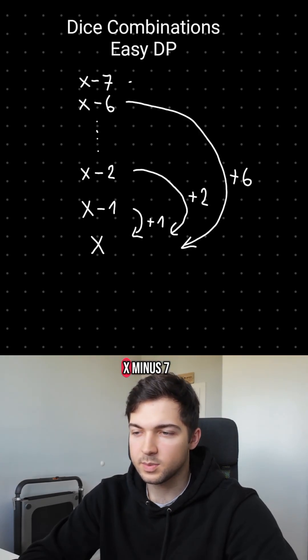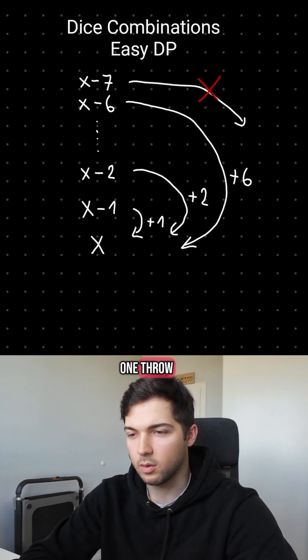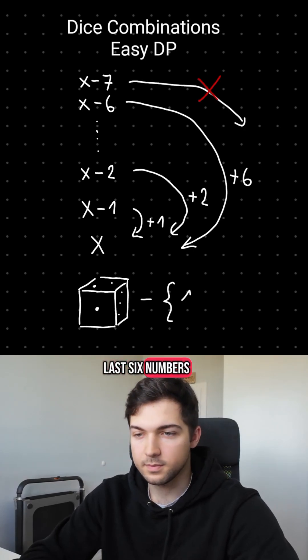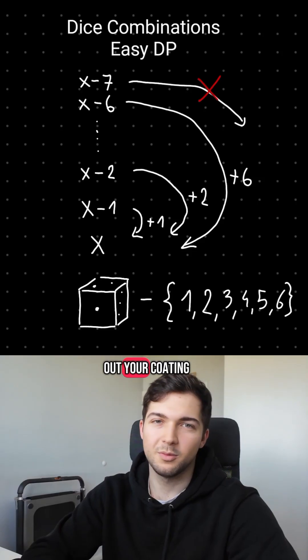We can't take x-7 because we can't get 7 with one throw. That's why we only add the last 6 numbers. Follow for more and let's max out your coding.